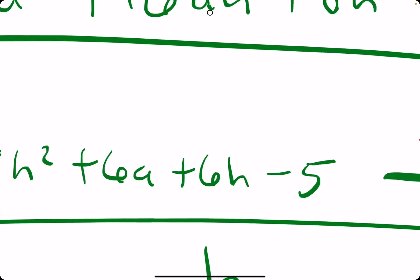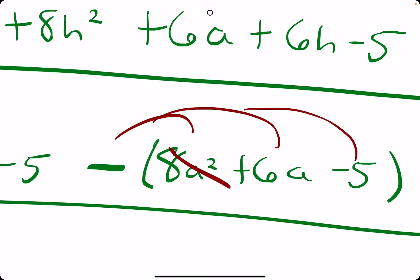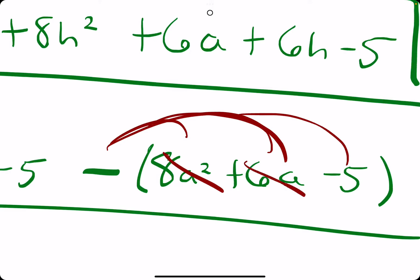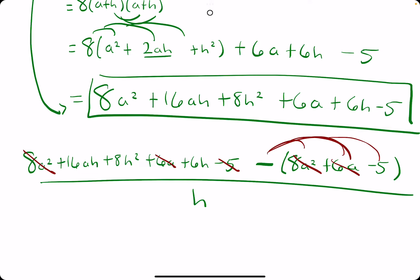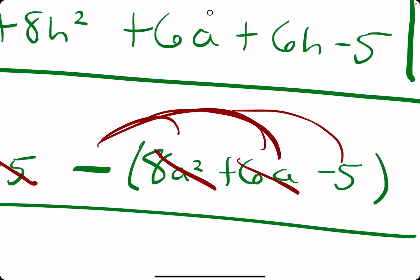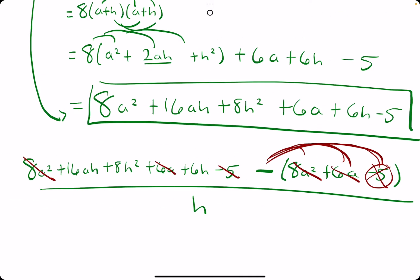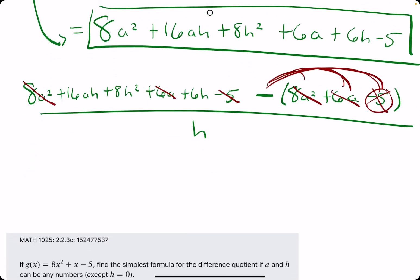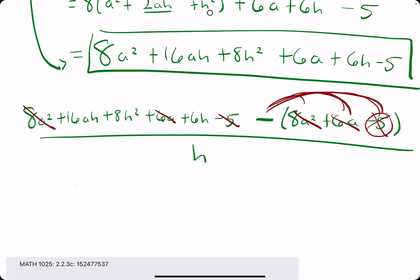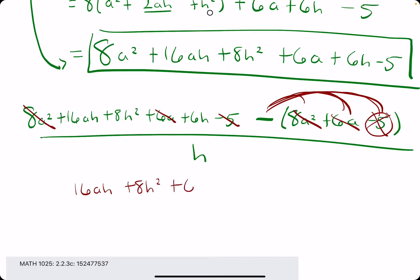We basically have 6a canceling out with a negative 6a. And then a negative 5 cancels with a positive 5. And this becomes positive 5 because you distribute the negative to that to make it positive. So, all these terms should cancel with three of the terms from kind of the first half here. So, then the question is, what are we left with?